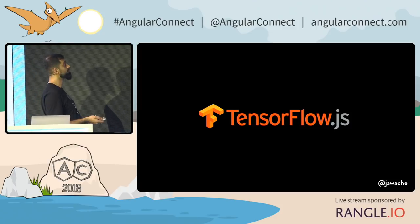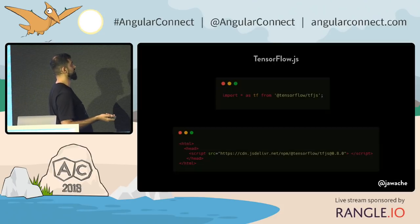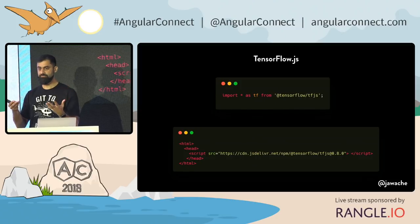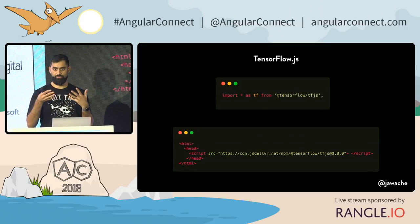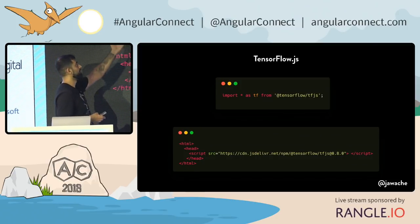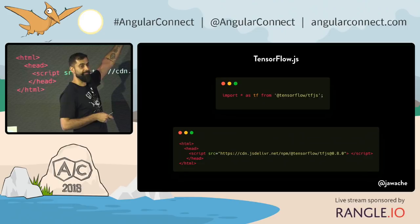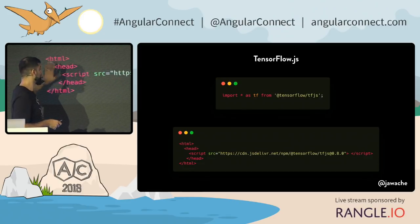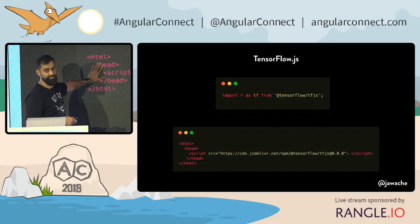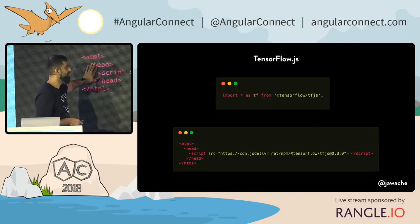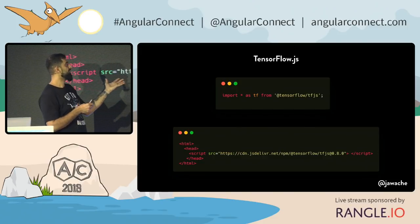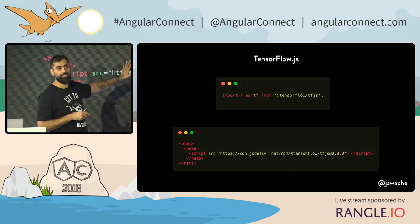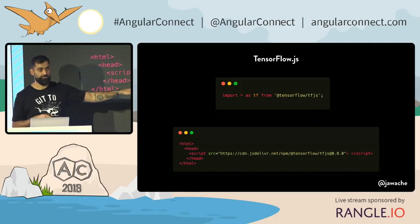Why is that important? It means that in order to do TensorFlow, in order to do machine learning, all you have to do is have one import. Or if you're like me, just drop in a script tag. That's all you need to do in order to do machine learning in JavaScript.